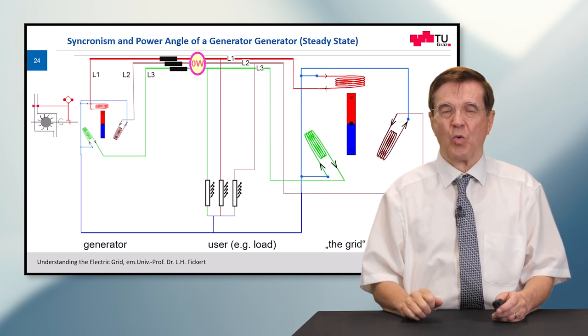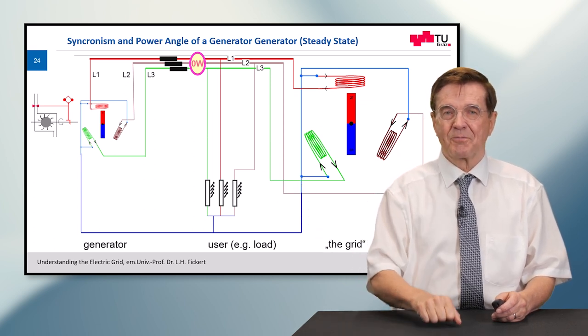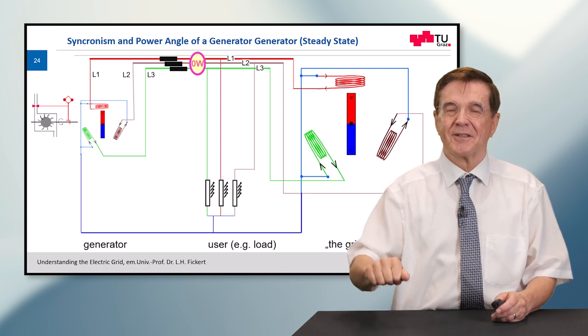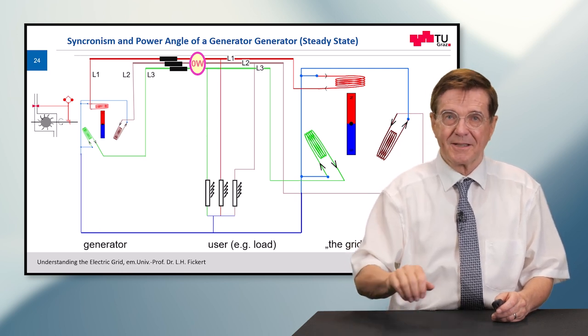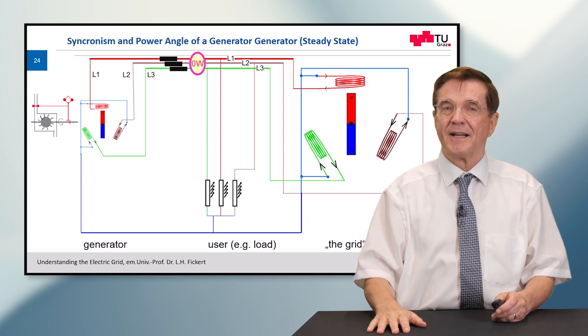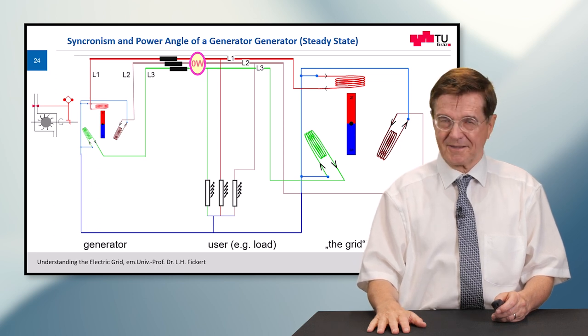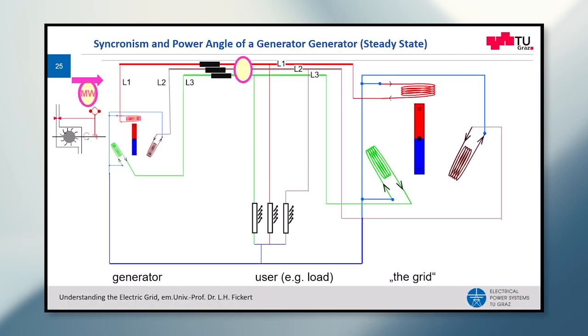The turbine controller has one job: convert primary energy into secondary electrical energy, into electrical power. And the turbine controller does this. So this means we import for the power station primary energy so and so many megawatts, and we export them since the export must be like the import to have stable conditions.